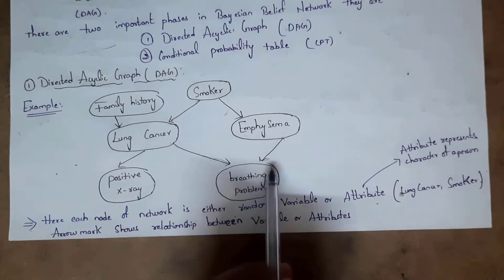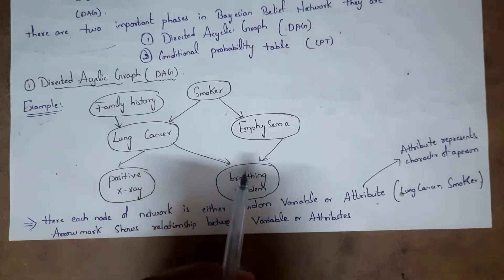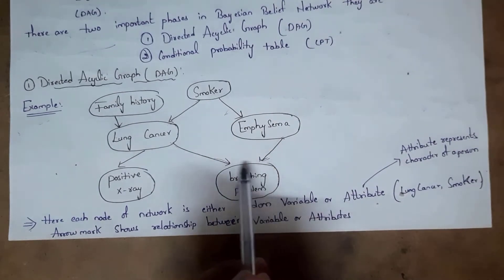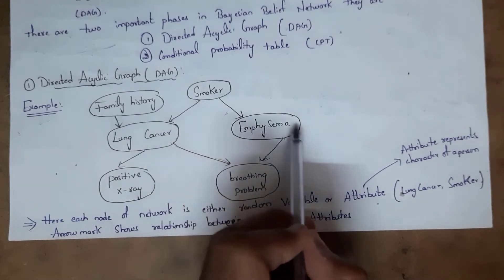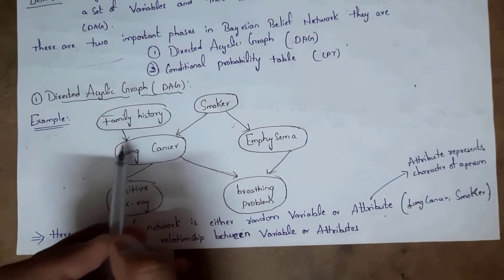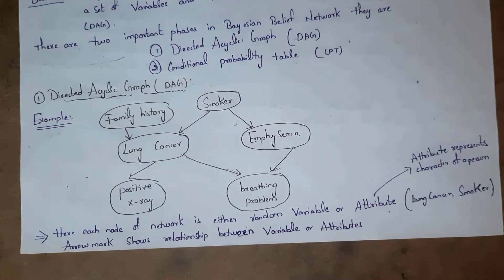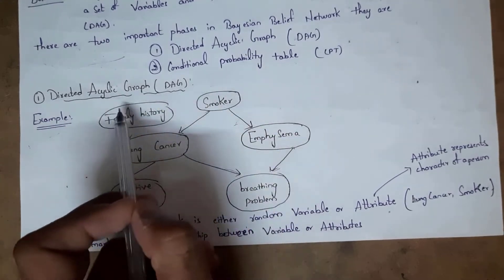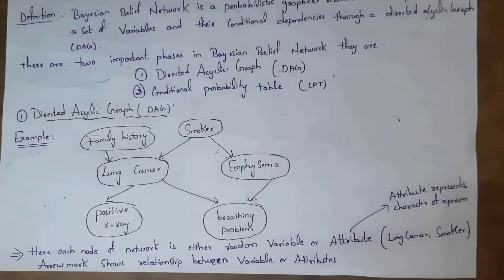For the variable breathing problem, its parents are lung cancer and emphysema — both cause breathing problems. For the variable lung cancer, it depends on family history and smoker, so the parent variables of lung cancer are family history and smoker. These dependent variables are called parent variables.